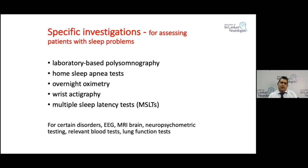Overnight oximetry is simple. Wrist actigraphy is a method of detecting how active and inactive we have been during a certain period of time, indirectly telling us the times we were sleeping as well as when we were awake. It's a gadget worn like a wristwatch that detects our movements. The multiple sleep latency test is another test that we use, and I'll come back to it.